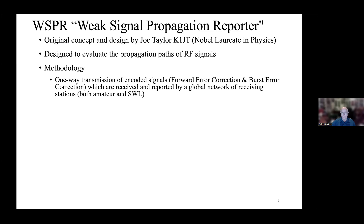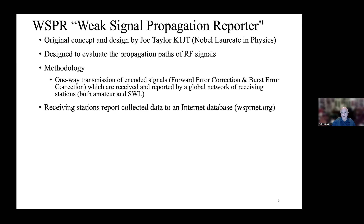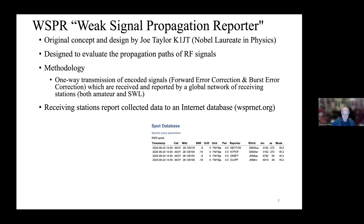Joe was interested in looking at propagation paths of RF signals, particularly for moon bounce communications. It expanded to meteor shower communications, tropospheric propagation channels, and weak signal detection paths. He was looking at a way of using encoded signals incorporating both forward error correction and burst error correction. These are received and reported by a global network of receiving stations, including both amateur radio operators and shortwave listeners. The receiving stations report their data to an Internet database at whispernet.org, where you can see where your specific signal was received throughout the world.